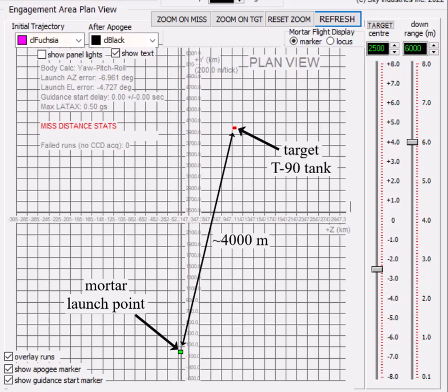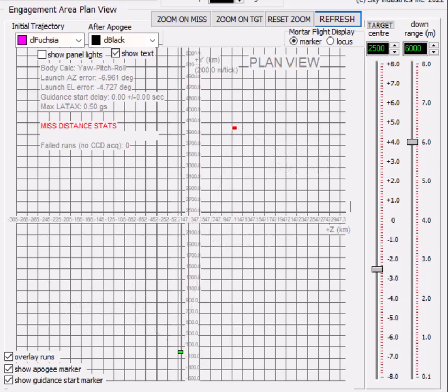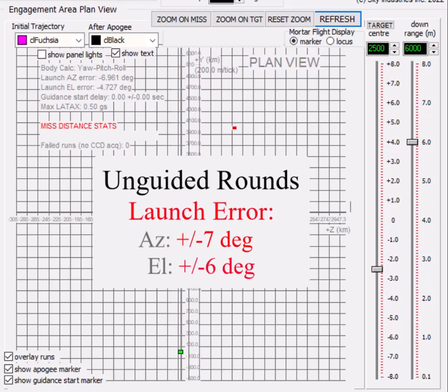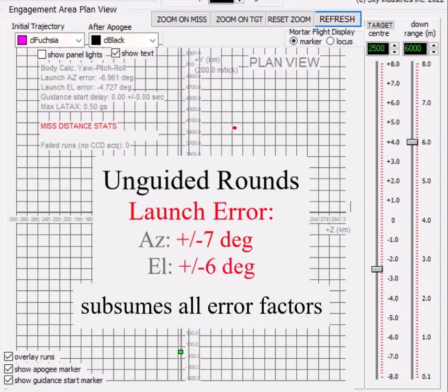Let's first see where the unguided mortar rounds land relative to the target when the mortar launch direction has an effective error of plus or minus seven degrees in azimuth and plus minus six degrees in elevation. That error window is meant to account for all the error factors like wind, mortar physical steadiness, variation of round muzzle velocity, and so on.